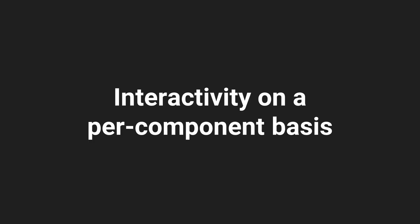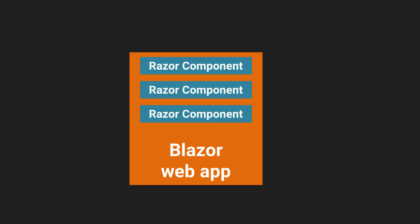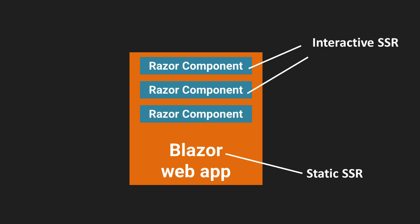Second, we can have interactivity on a per-component basis. The entire application uses static server-side rendering, and then individual components within the app can be made interactive using interactive server-side rendering. For only those components, a SignalR connection is established and the UI gets updated in real time.